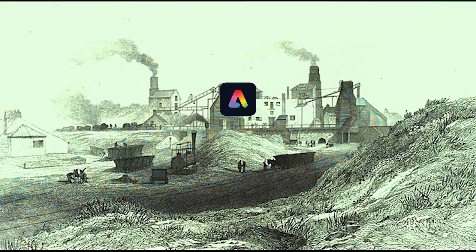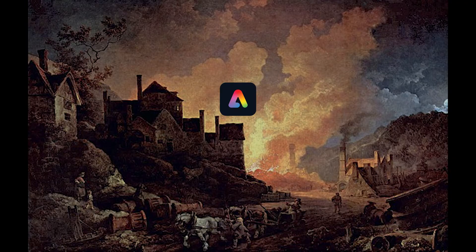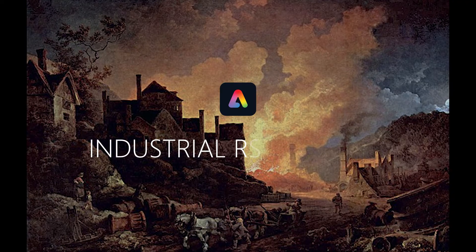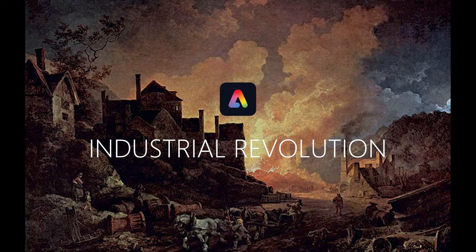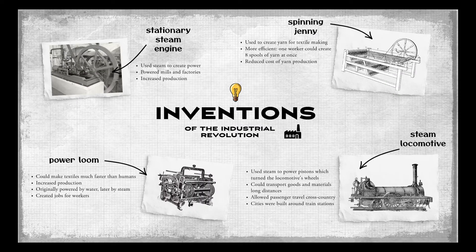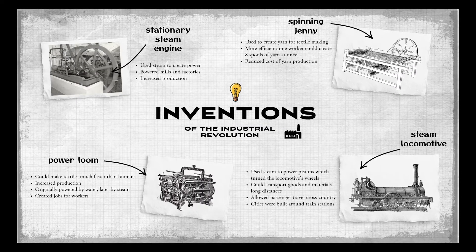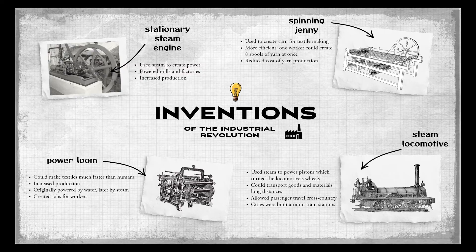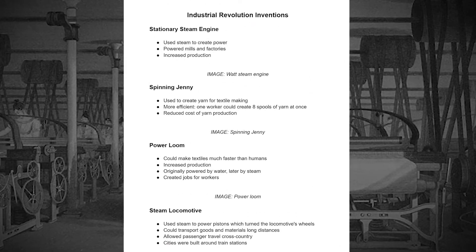Hello and welcome to this Adobe Express lesson all about the industrial revolution. Today we're going to make an infographic about four important inventions from the industrial revolution and how they changed Britain. I've chosen the stationary steam engine, the spinning jenny, the power loom, and the steam locomotive, better known as the steam train.